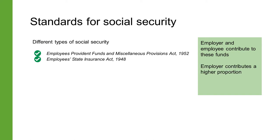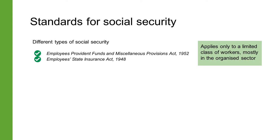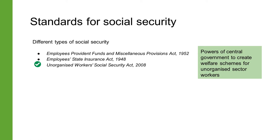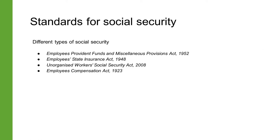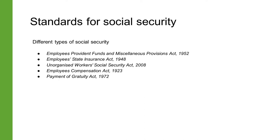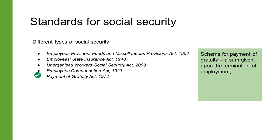Both the employee and the employer are expected to make a contribution of a proportion of wages towards these funds, with the employer contributing a higher proportion. Both these laws apply only to establishments that employ a certain number of employees. For workers of smaller establishments, the Unorganized Workers Social Security Act of 2008 enables the central government to create welfare schemes. The Employees Compensation Act of 1923 addresses compensation for temporary or permanent physical disablement, and the Payment of Gratuity Act of 1972 provides gratuity upon termination of employment after five or more years of continuous service.